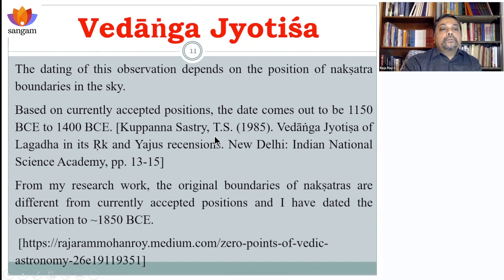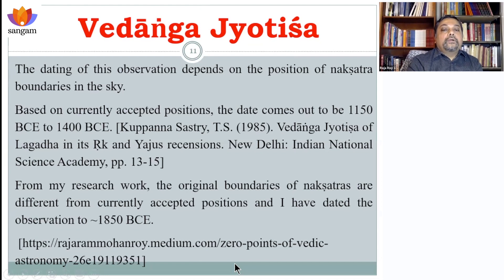The dating depends upon the nakshatra boundaries, which are not so clear-cut. Some people use Revati-based boundaries and others use Chitra-based boundaries, giving different results. From my research, I have proposed that the actual boundaries were 10 degrees from Revati, and depending on these boundaries, your dates will differ by up to 600 or 700 years. I have dated it to 1850 BCE, which you can read at my blog site.